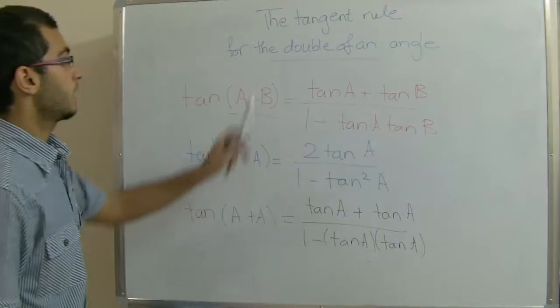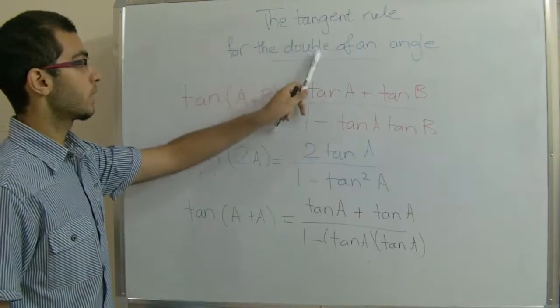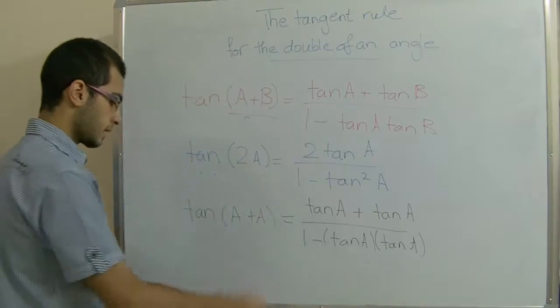So this is the rule for the tangent rule for the double of an angle. And let's see how it works.